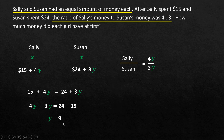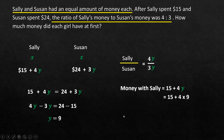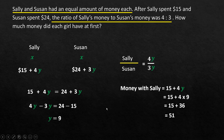The question asks how much money each girl had at first. Sally's initial money is 15 + 4y. We know y = 9, so it's 15 + 4 × 9 = 15 + 36 = $51. So the amount of money each girl had at first is $51.